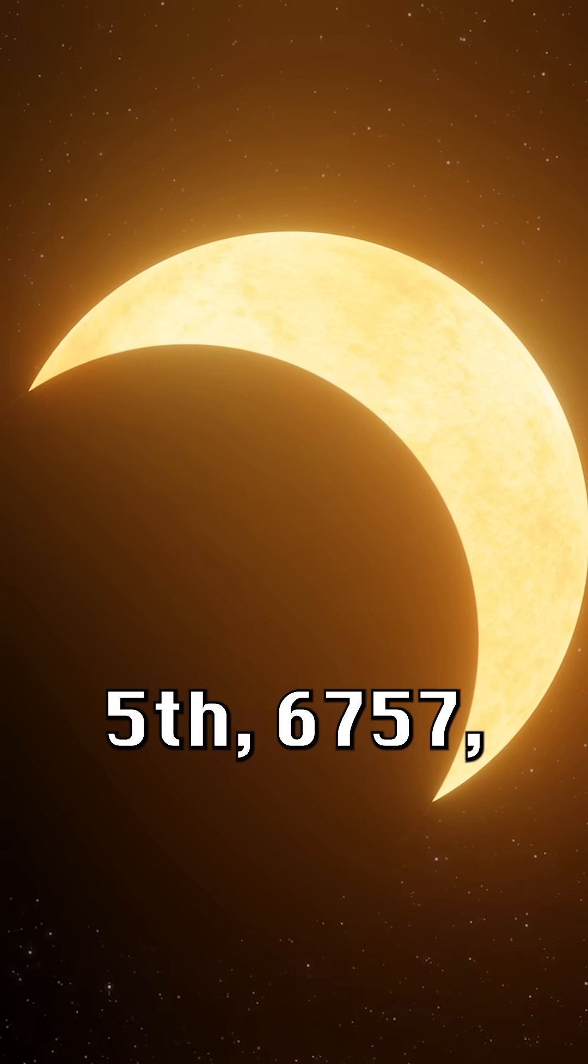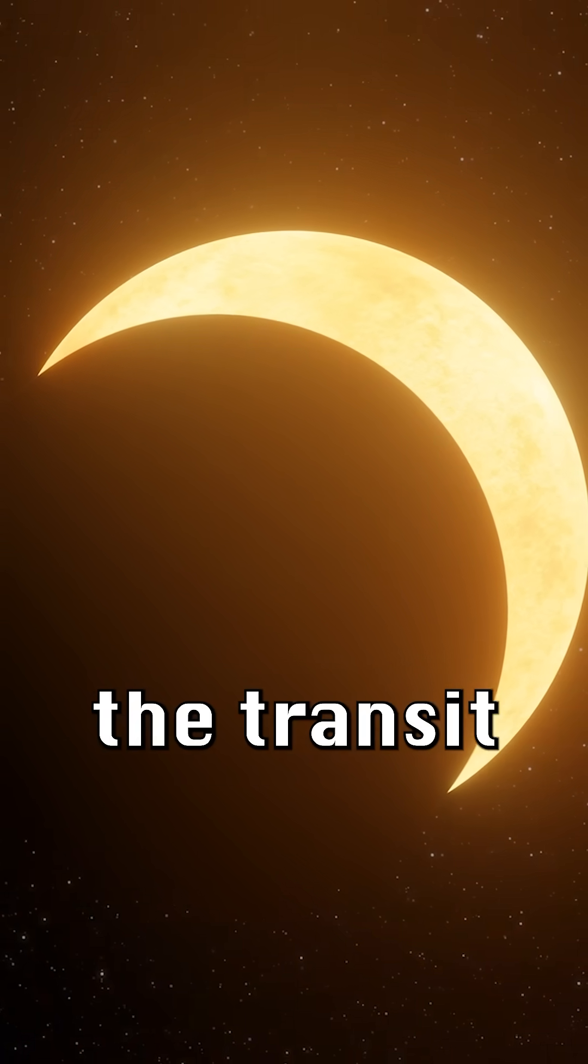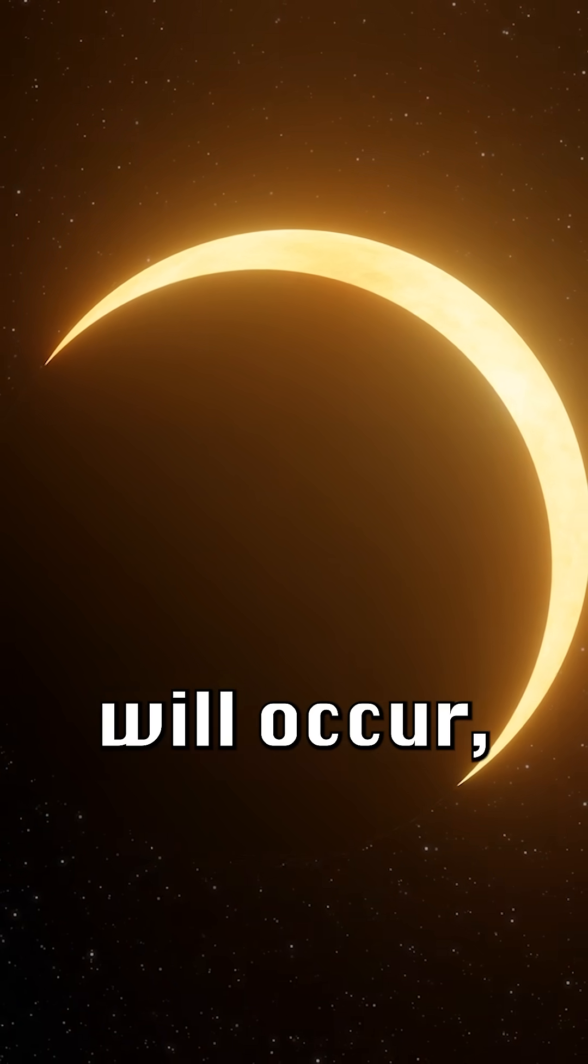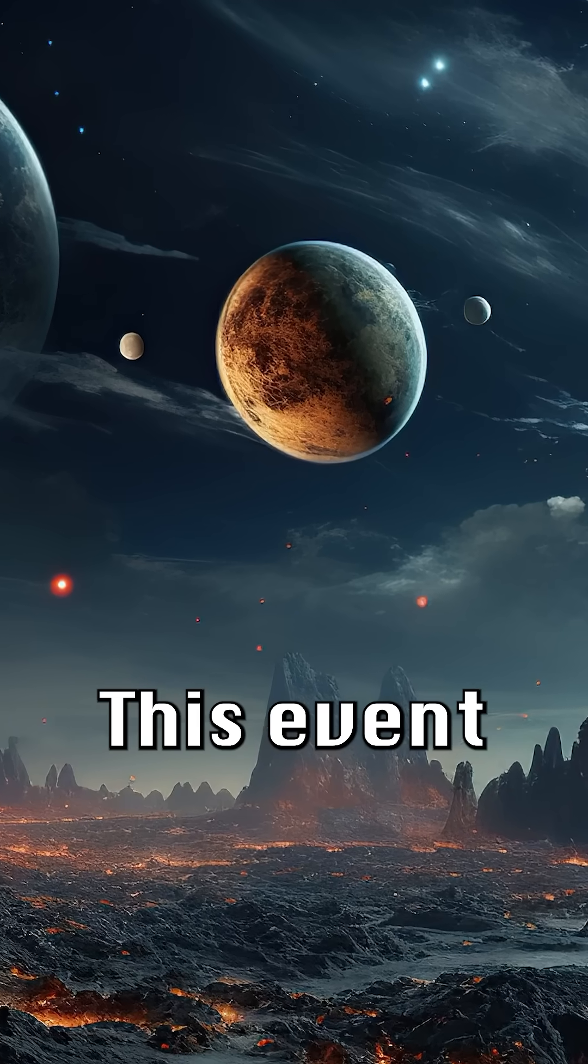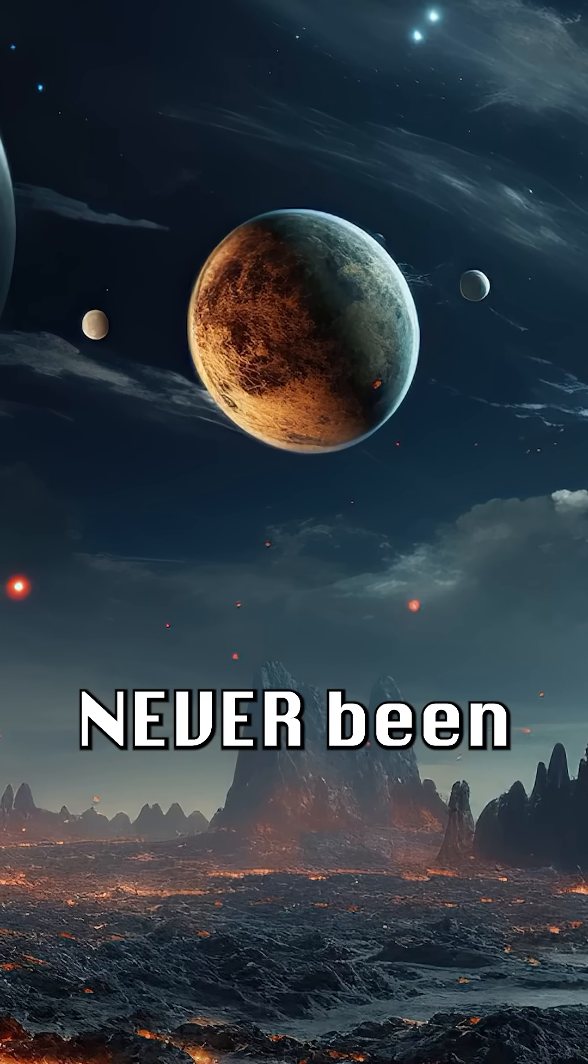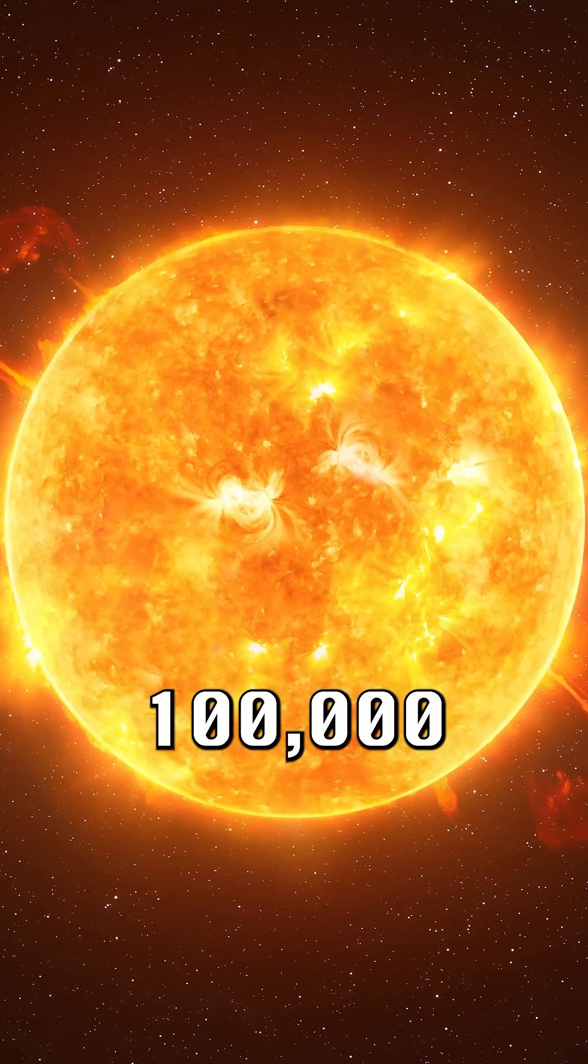On July 5th, 6757, the transit of Mercury during a solar eclipse will occur, allowing you to see Mercury without any magnification. This event is so rare that it has never been witnessed by humanity.